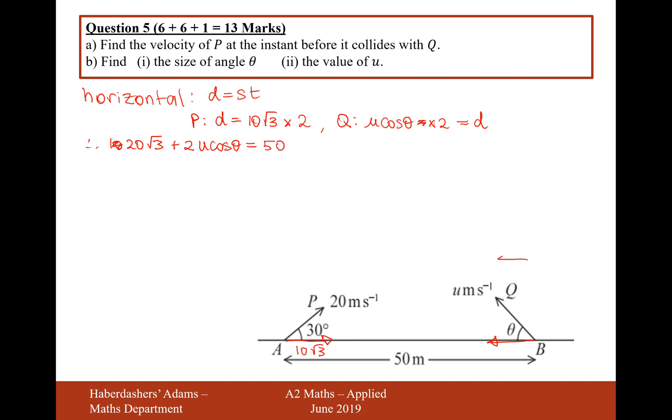What I've done with this question here is I've set leftwards to be positive for B, but rightwards to be positive for A. That shouldn't affect the question too much. We could divide by 2, and that would give us 10 root 3 plus u cos theta equals 25, and then maybe take the 10 root 3 onto the other side. So we get u cos theta equals 25 minus 10 root 3. Okay, so this is going to be important. Hopefully, at some point later on, when we start to work vertically, we're going to get expression for u sine theta.